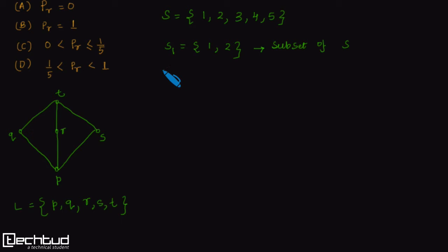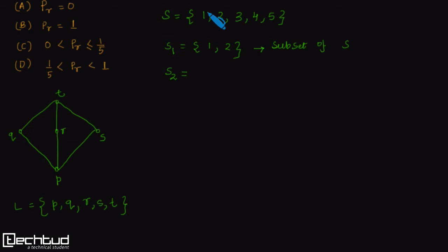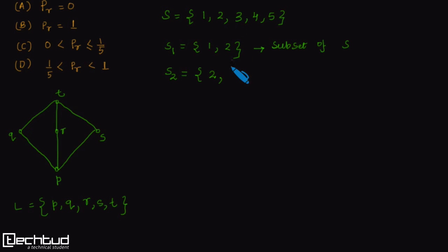We can also construct a new set S2 where we define S2 as the set constructed by multiplying the elements of set S1 by 2. So for the first element I multiply 1 by 2, giving the first element of S2 as 2. For the second element I multiply by 2 to get 4, then 6, 8, and 10, and so on.